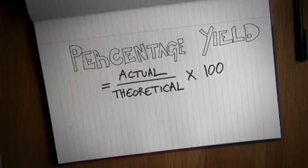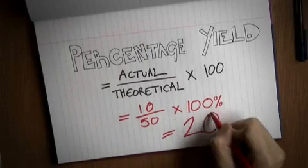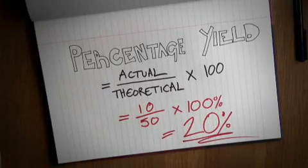So if I was supposed to get say 50 grams of a product and I actually got 10, what would be the yield then? It would be 10 divided by 50, which is 0.2, and then times by 100%, so 20%. So why isn't the yield 100%?